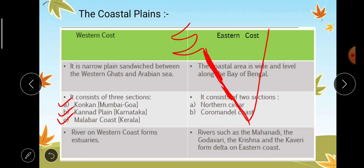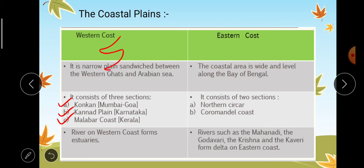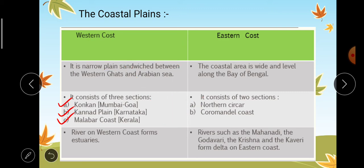The eastern coast consists of two sections. From Tamil Nadu it is known as the Coromandal coast. Further up it is known as the Northern Circars. So the eastern coast has the Northern Circars and the Coromandal coast.